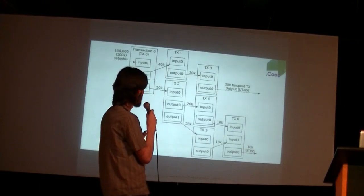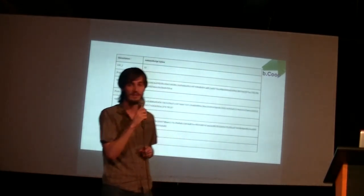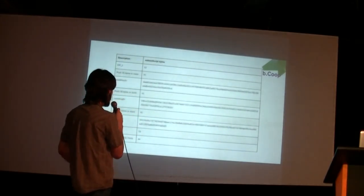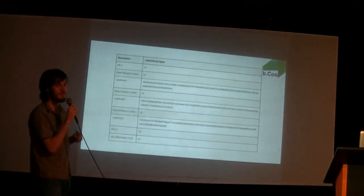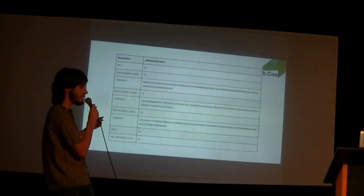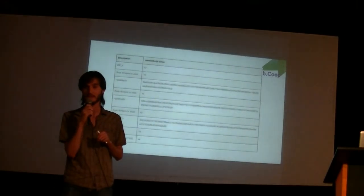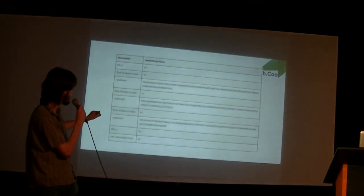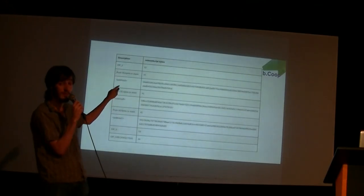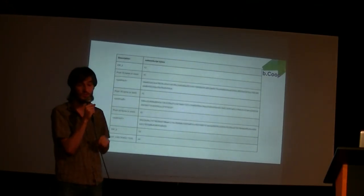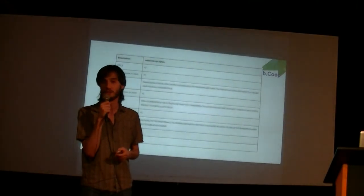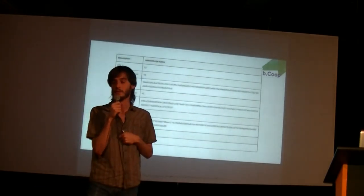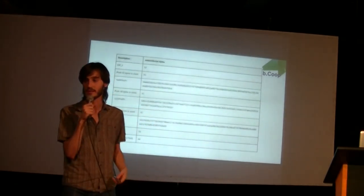In the case of our drug deal, this is what the script on the first transaction would look like. It confusingly reads from the bottom up. So the very first thing that happens is we are going to check some signatures. Then we say that there are three signatures, and then we give the three public keys. Then we say we need two out of those three signatures to actually redeem. And then there are two parameters missing, and those will be provided when the script from the next transaction is prepended to this one.